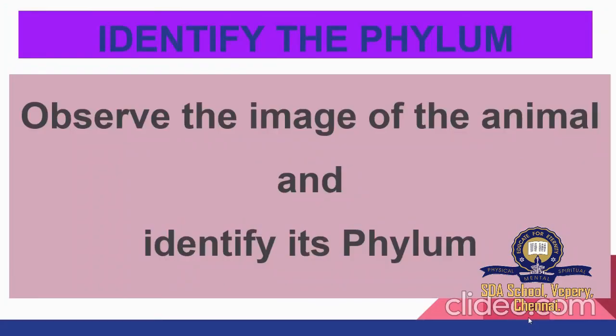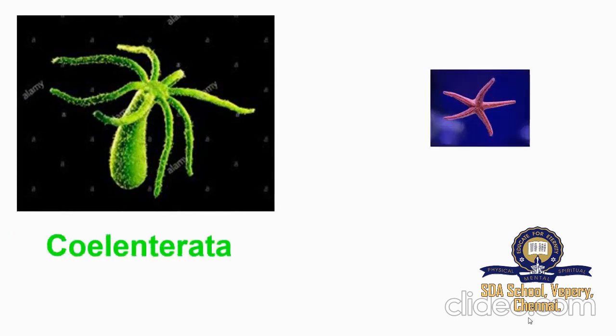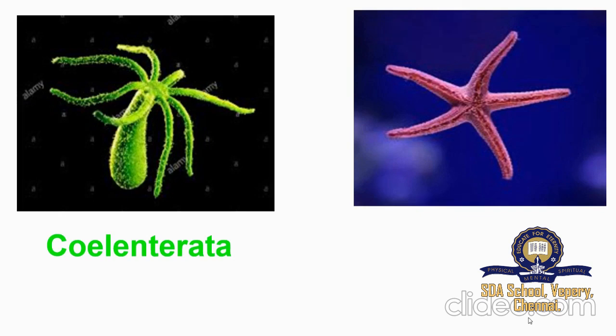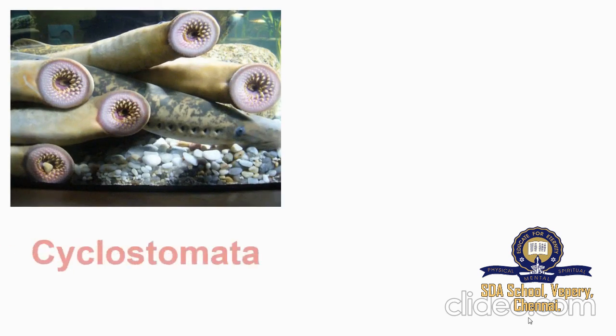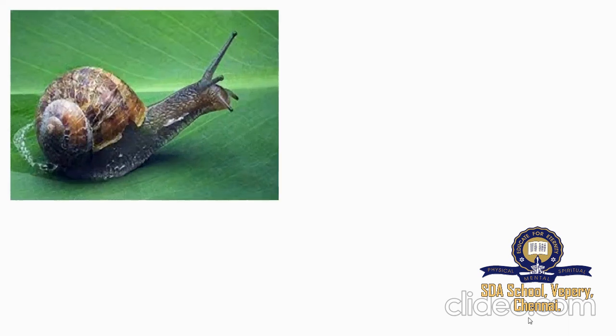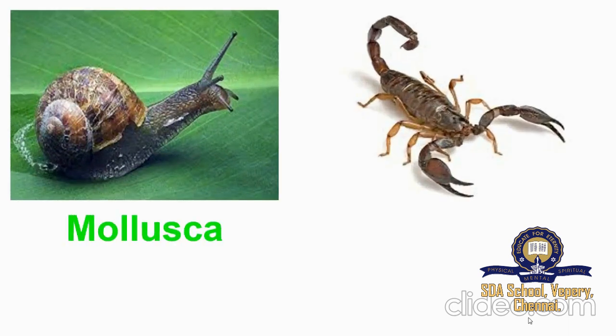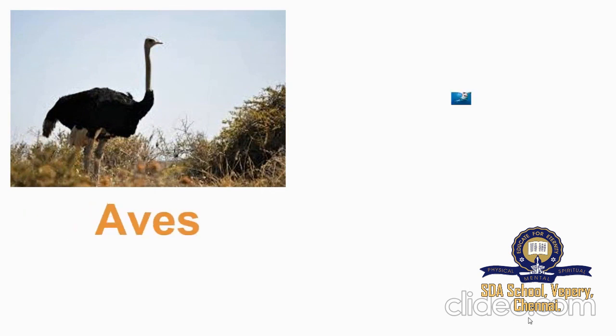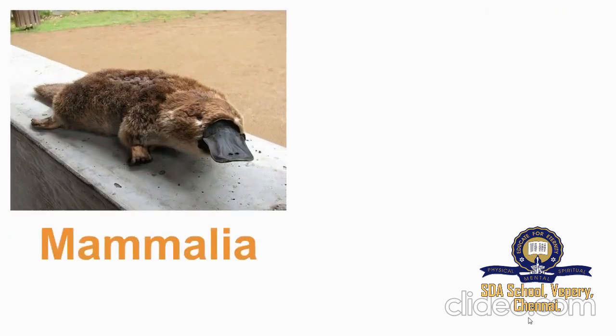Let's identify the phyla from some images. The first picture belongs to Phylum Cnidaria. Starfish belongs to Phylum Echinodermata. The next is Phylum Cyclostomata. Leech belongs to Phylum Annelida. Snail belongs to Phylum Mollusca. The next is Arthropoda. Then an example for Aves — birds. This is an example for Pisces — fishes. This is an example for Mammalia, and humans come under class Mammalia.